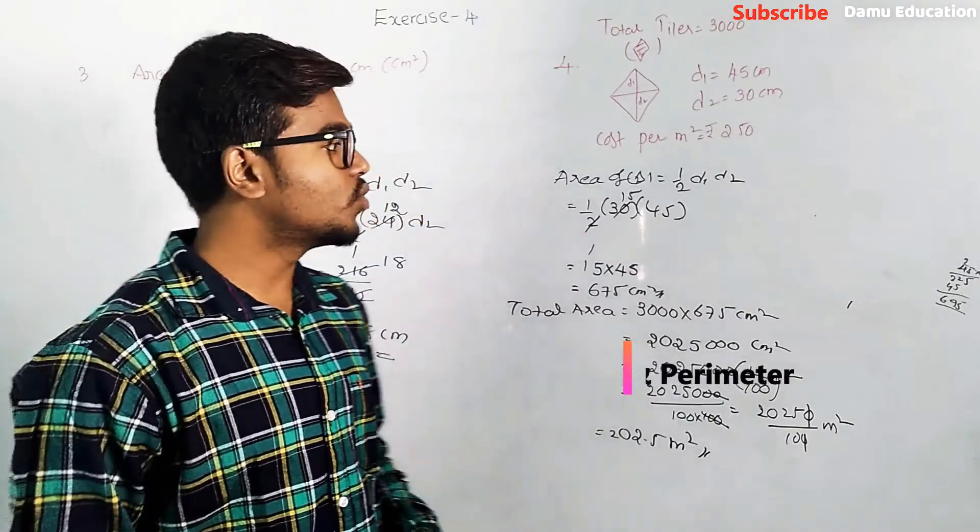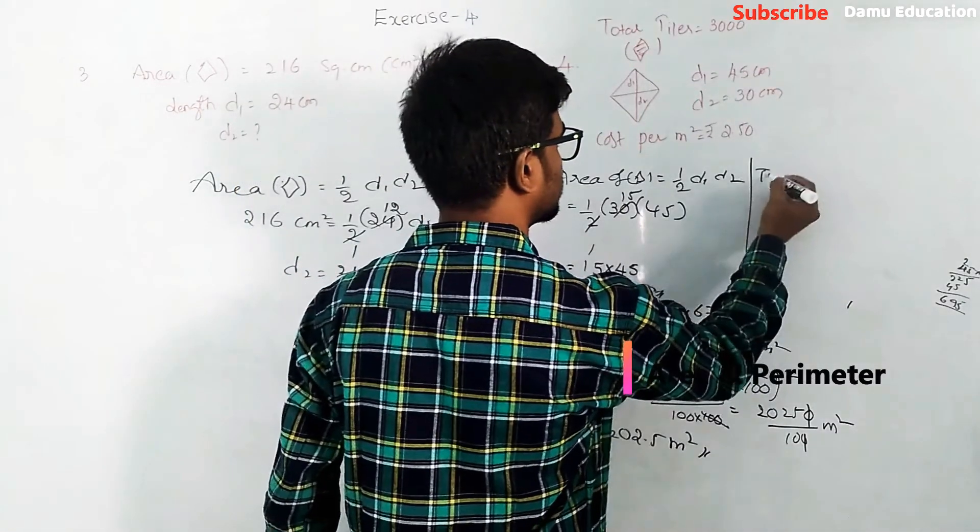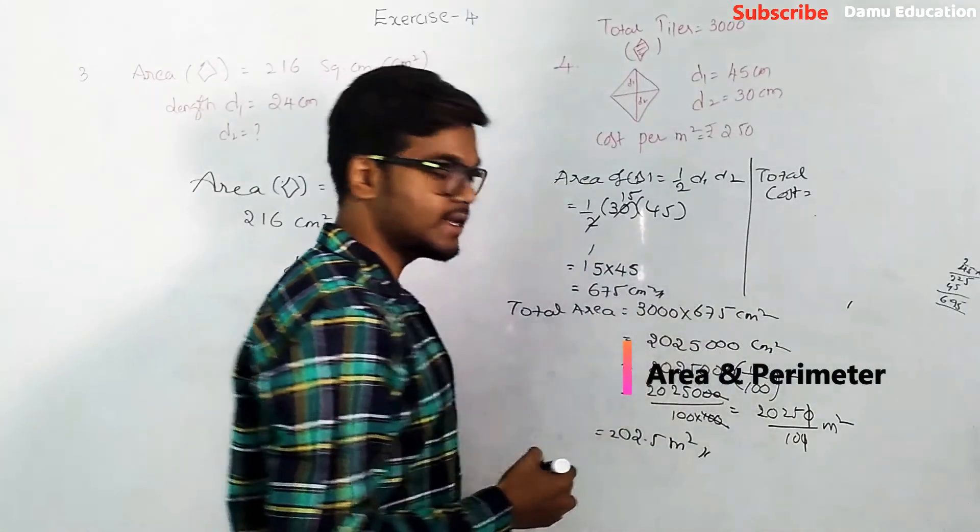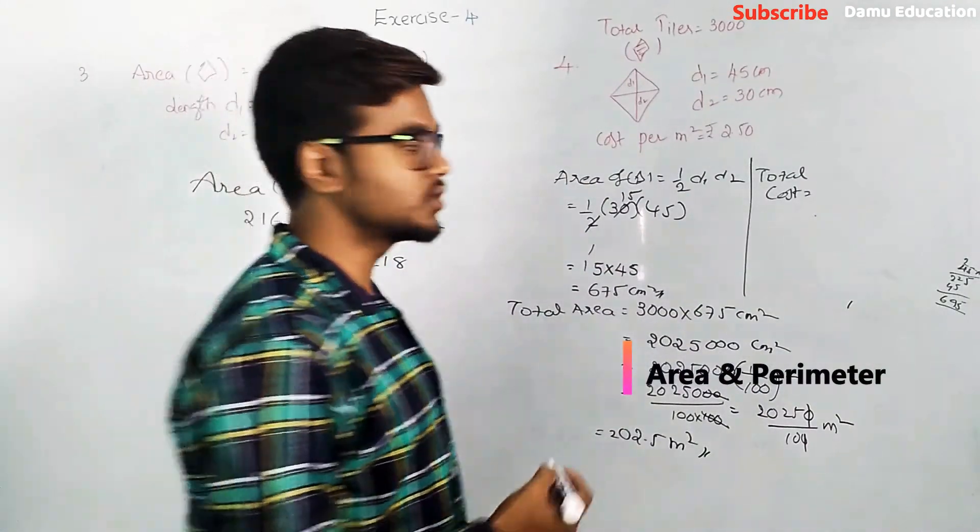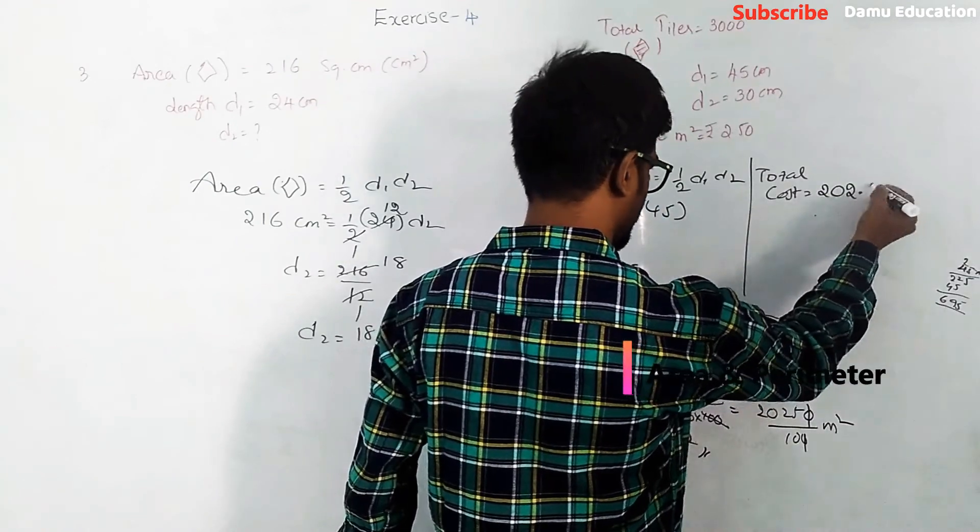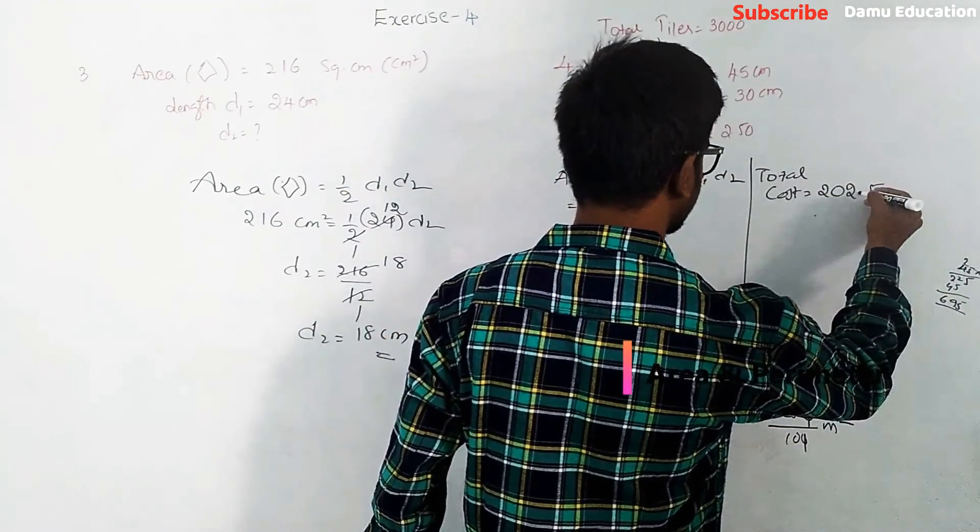Then what is the total cost? Total cost will be total area into cost for each meter square. The total area is 202.5 meter square.